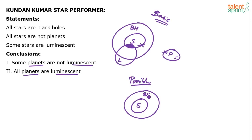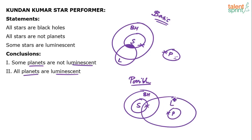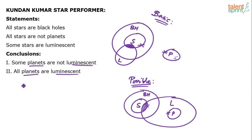In the possible diagram: all stars are not planets, so planets still don't touch stars. Some stars are luminescent — I can draw luminescent overlapping planets this time. Did we violate any statement? No — all stars are black holes, all stars are not planets, and some stars are luminescent still hold. Now look at the conclusions: some planets are not luminescent, and all planets are luminescent. These form a complementary pair.